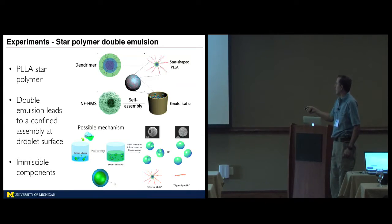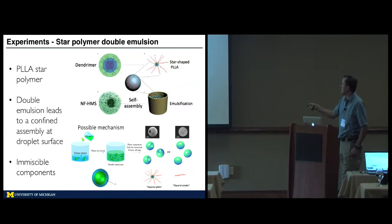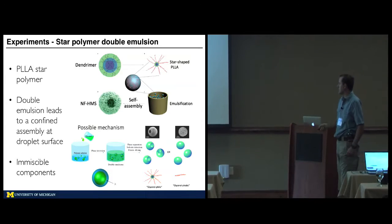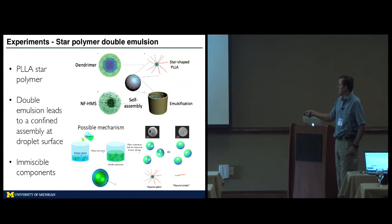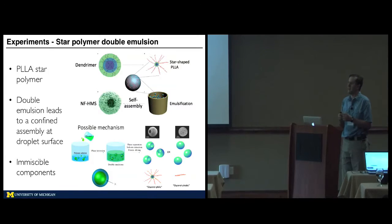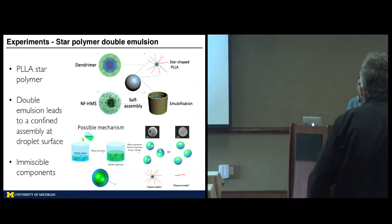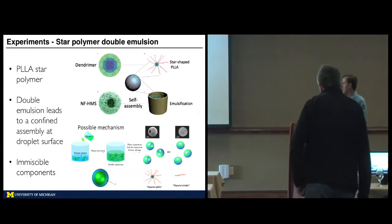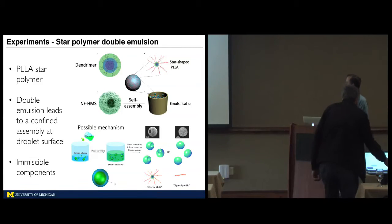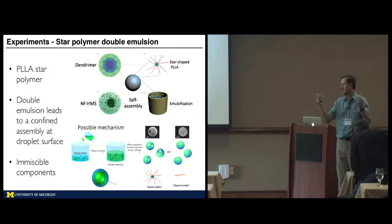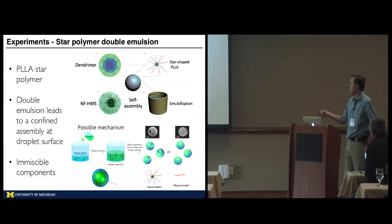In more detail: they have polylactic acid on this dendrimer, they put it in a glycerol solution, and out comes buckets of these little micro droplets. Based on the parameters, they can end up with hollow cores that have solvent in the middle and on the outside — a double emulsion — or they can have just solid spheres with solvent all on the outside. The physics of this is really pretty simple.